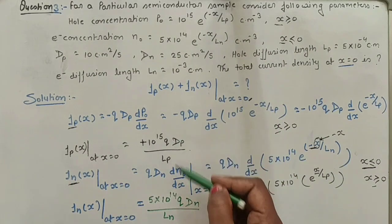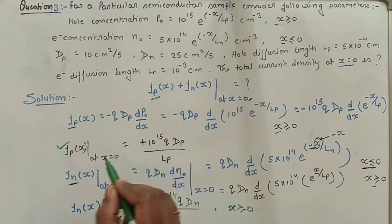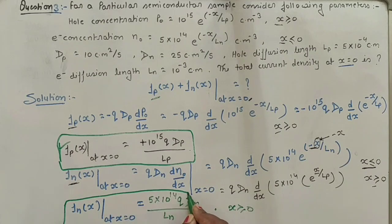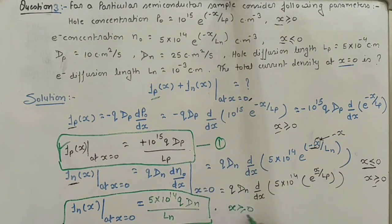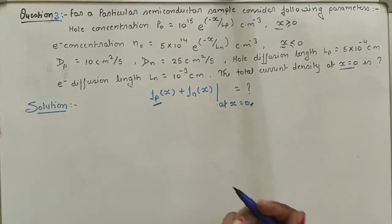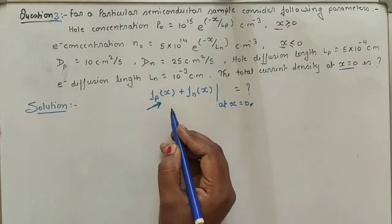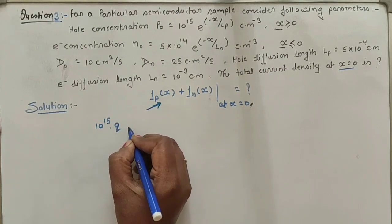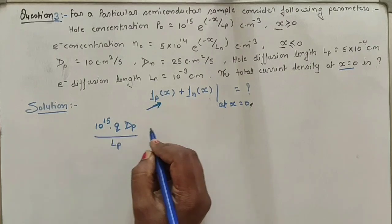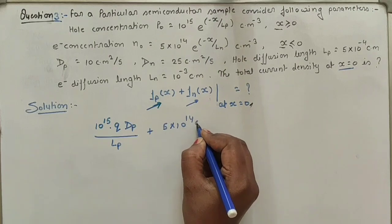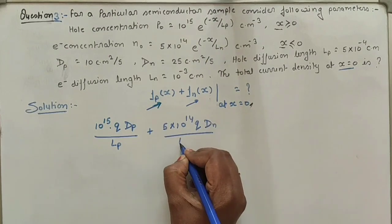Now we add both current densities. Total J = JP(x=0) + JN(x=0) = [10¹⁵ · q · DP / LP] + [5 × 10¹⁴ · q · DN / LN]. Substituting: 10¹⁵ × 1.6×10⁻¹⁹ × 10 / (5×10⁻⁴) plus 5×10¹⁴ × 1.6×10⁻¹⁹ × 25 / (10⁻³).